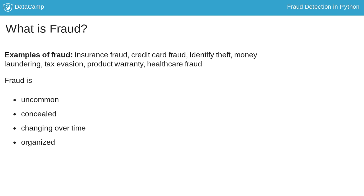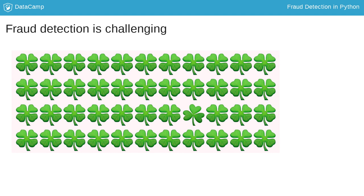Let's illustrate this with an example. Have you ever played Where's Waldo? or Find the odd one out? Like in the game, in fraud detection you'll need to train an algorithm to pick a well-concealed observation out of many normal observations. Can you find the odd one out here? Here it is — it looks like the other clovers, but it deviates slightly.